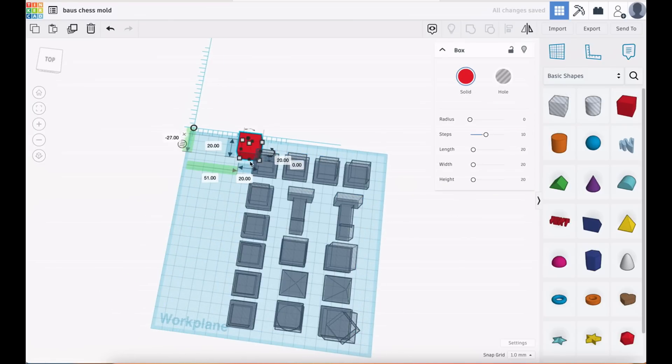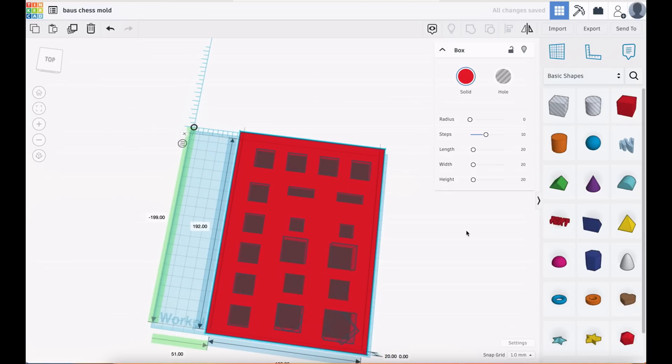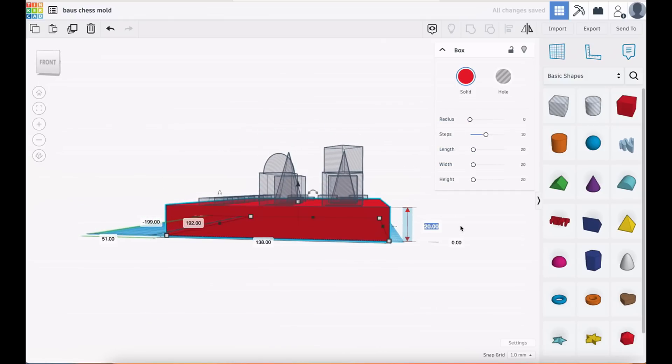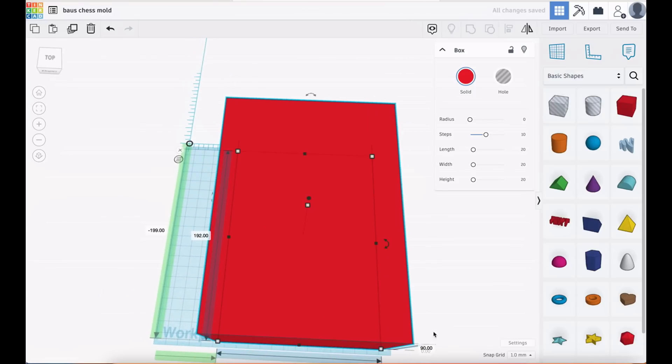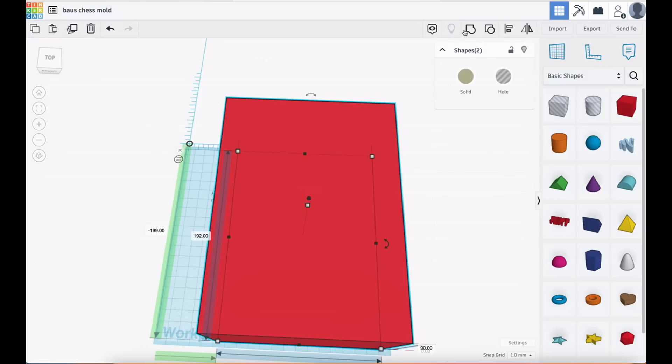So if we put a box on that, drag that box to cover the whole space, make sure it's high enough, okay, and now we group that again. There you go, once it's finished.